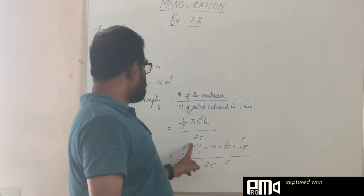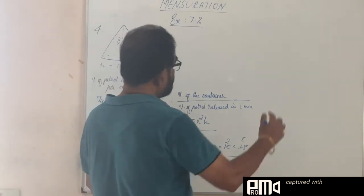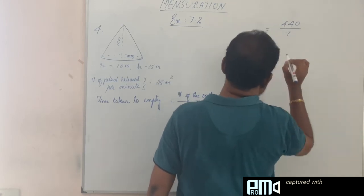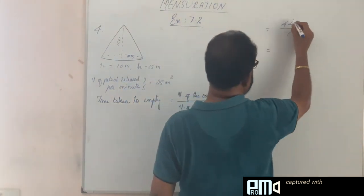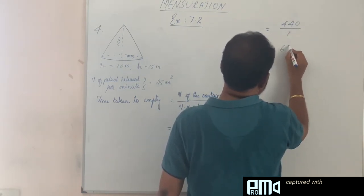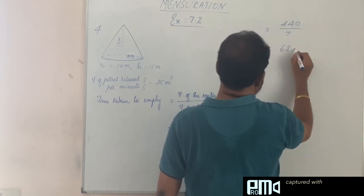So this is equal to 440 divided by 7, so that is equal to... 7 into 20 is 14, 6 remainder, 60...